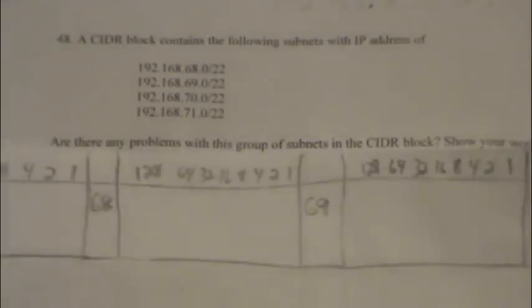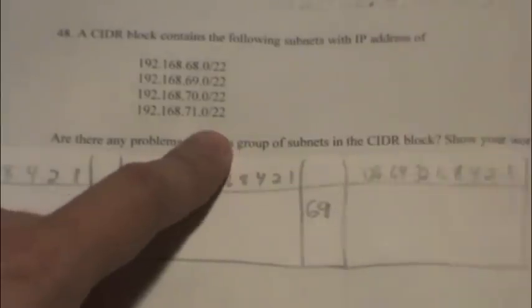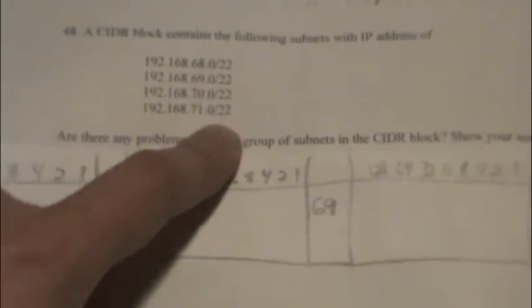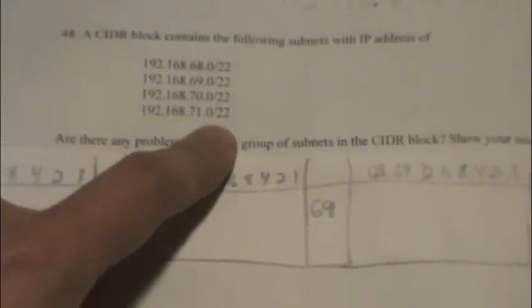A CIDR block contains the following subnets with IP addresses, with slash-22s for the netmask. The first thing we're going to want to do is convert this slash-22 into a binary value.